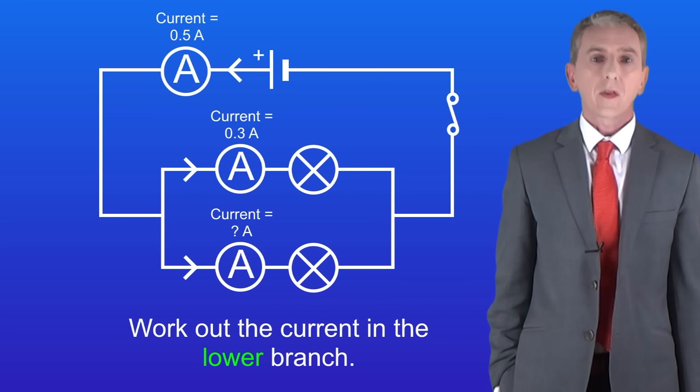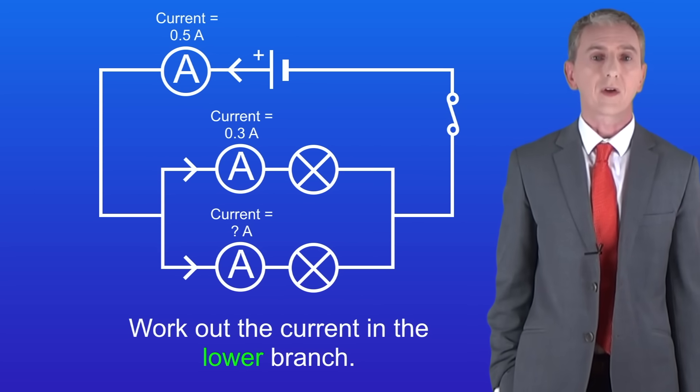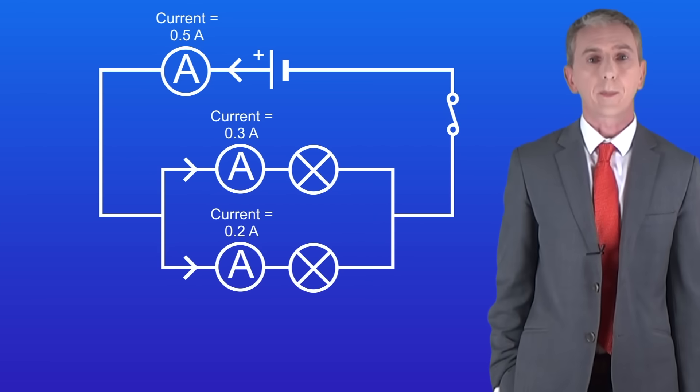Okay so we know that the current leaving the cell is 0.5 amperes. We also know that the current in the upper branch is 0.3 amperes. Remember that the current in the branches adds up to the total current leaving the cell. This means that the current in the lower branch must be 0.2 amperes.